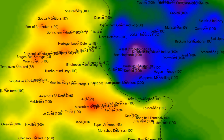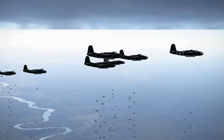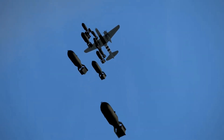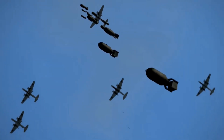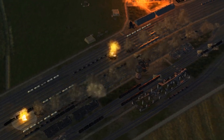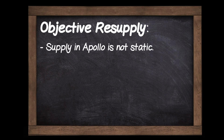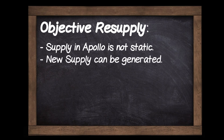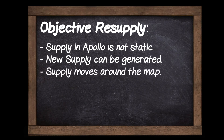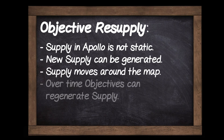But if supply was just a static thing to be destroyed, then objectives on both sides of the front line would just be bombed to rubble, and the front line would just stagnate with all these bombed-out targets on either side. In Apollo, supply isn't just a static thing to be destroyed — it's also created and moved around the map. So long as they aren't being continually bombed, objectives will slowly regain their supply and slowly repair themselves.